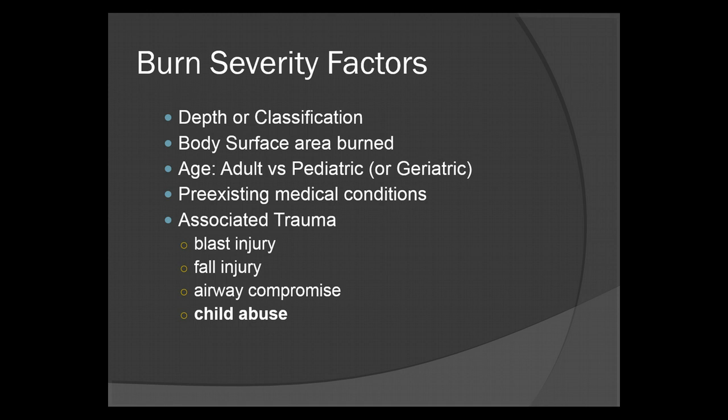Pre-existing medical conditions are obviously going to play a pretty important role. We're also going to look at associated trauma — is it a blast injury, or is there a fall associated? Is there any airway compromise? If you notice singeing around the nose or lips, or even the mucous membrane in the mouth, you can pretty well bet they inhaled some flames and could have potentially done some damage to the airway. Also, child abuse — are there round little burns on the child indicative of a cigarette burn? These things you always have to keep in mind.